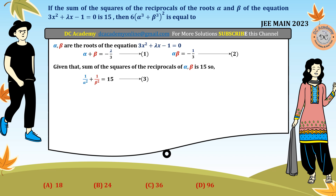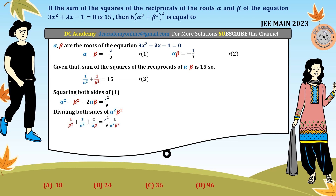From these three equations our job is to find the values of α and β. We square both sides of equation 1 and apply the (A+B)² formula to get α² + β² + 2αβ = λ²/9. Dividing both sides by α²β², we get 1/β² + 1/α² + 2/(αβ) = λ²/(9α²β²). We then replace 1/α² + 1/β² with 15 and αβ with −1/3.